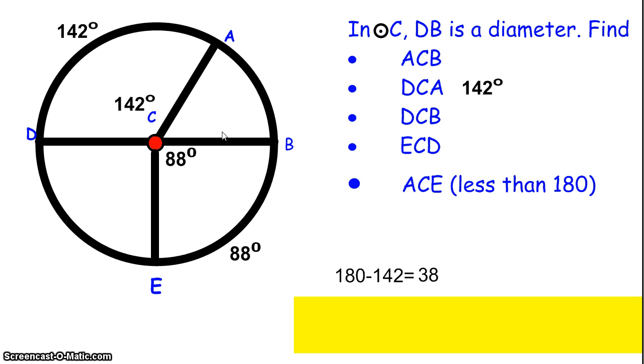To figure out the measure of angle ACB, I can do 180 minus 142 to get 38. And same thing on the other side. I know if DB is a diameter, I can do 180 minus 88 to get 92 right here. Now we have to do some combinations to get some of the other numbers that we have here. If we're trying to figure out angle ACE, for instance, we would have to put together 38 and 88 to get our answer.